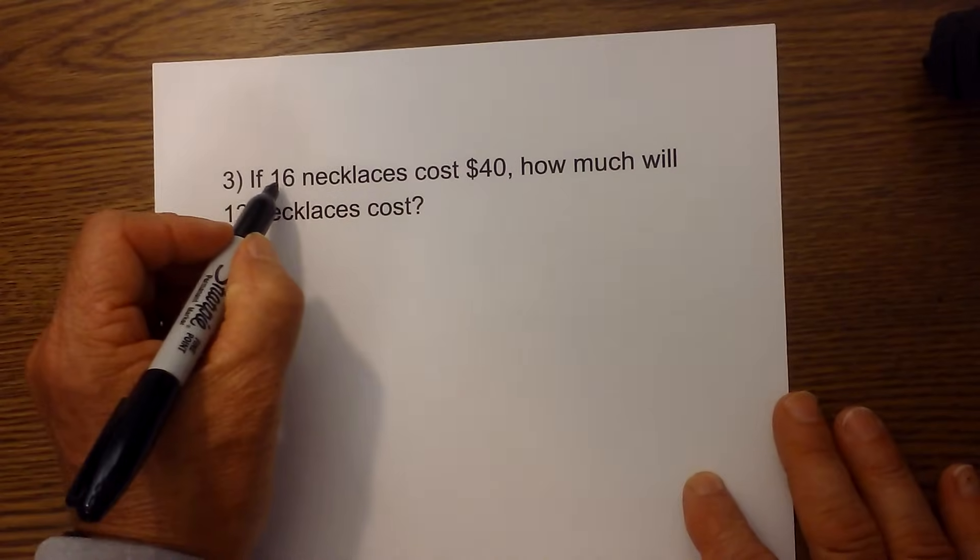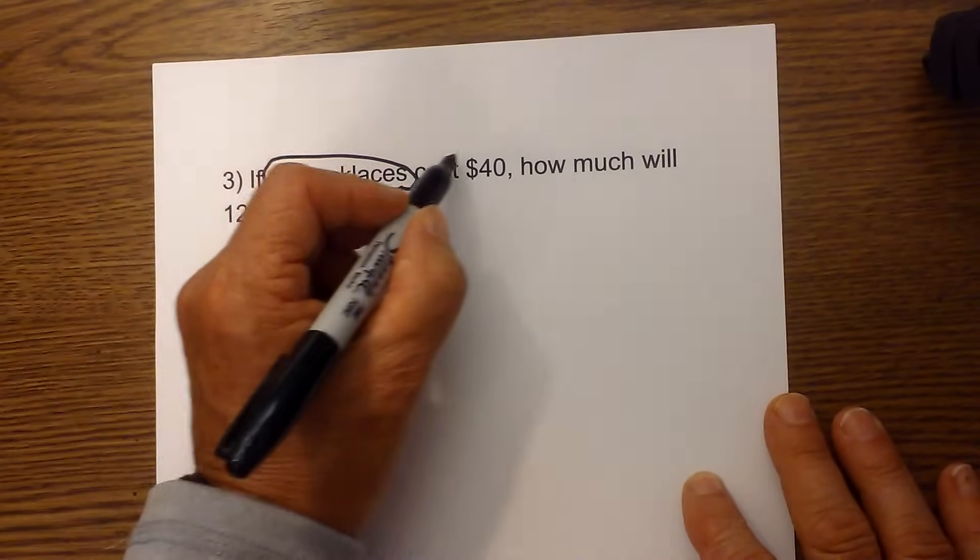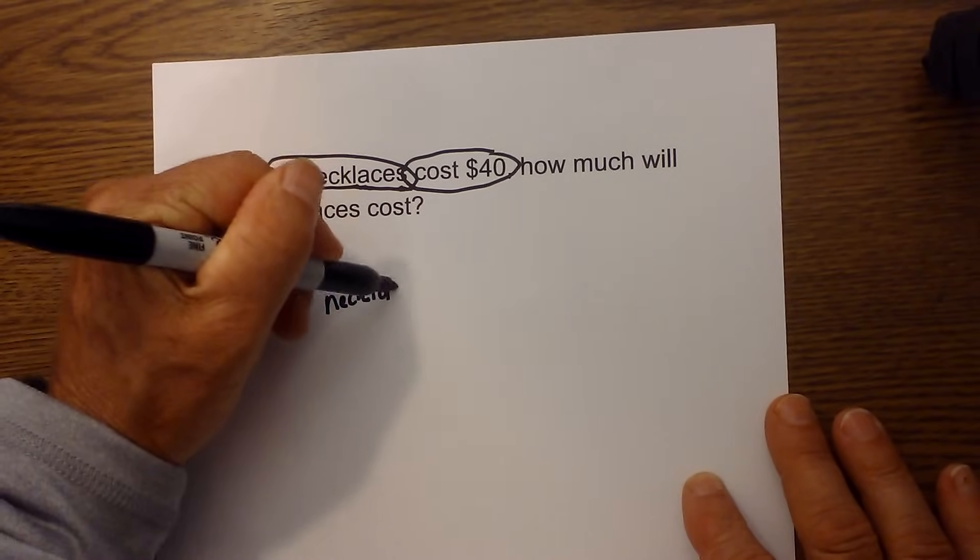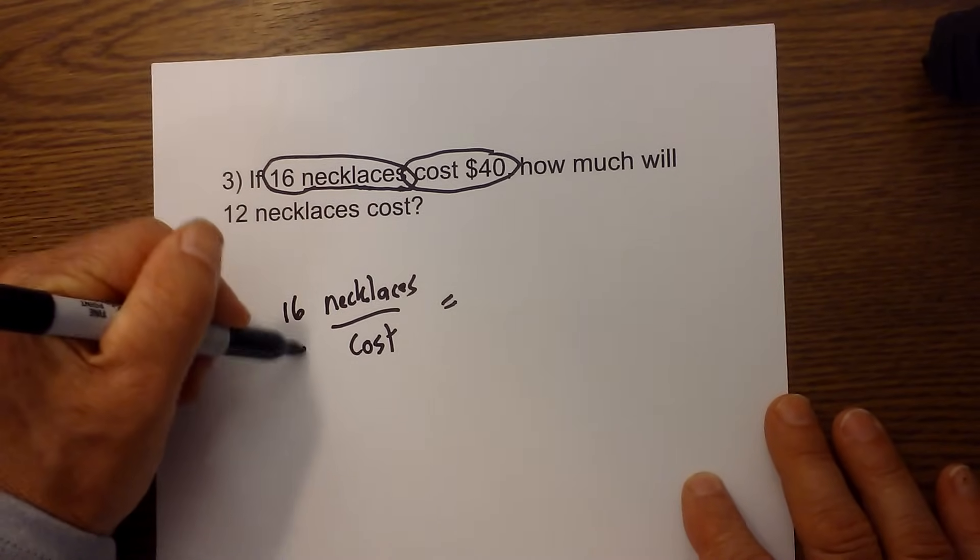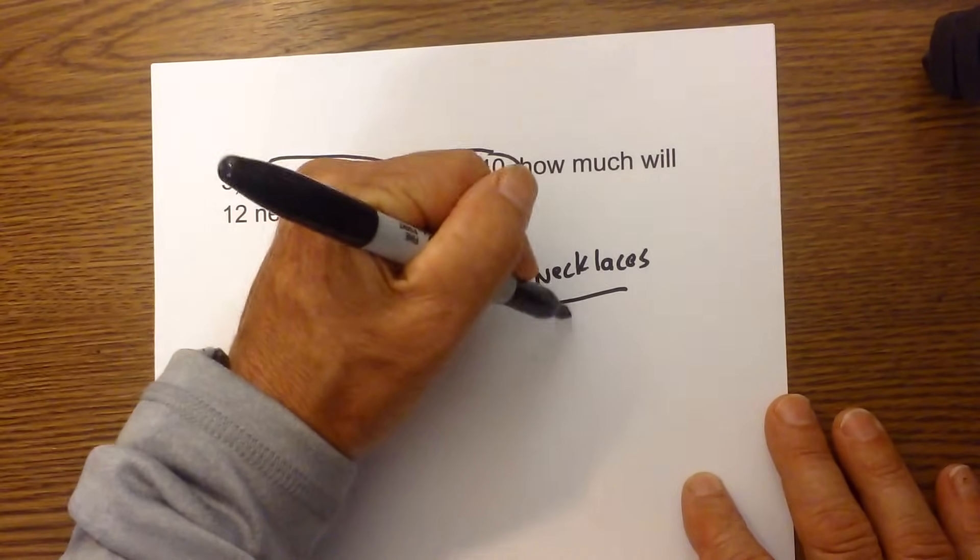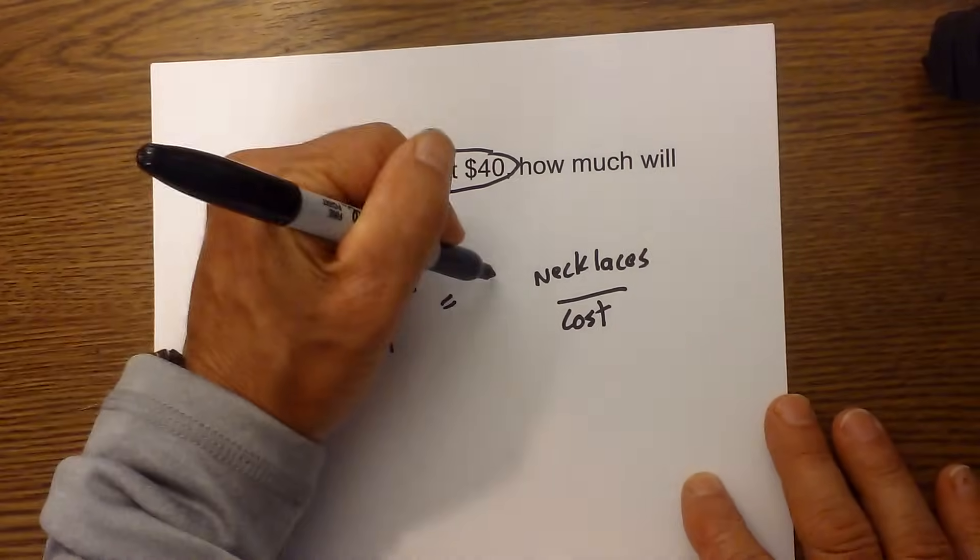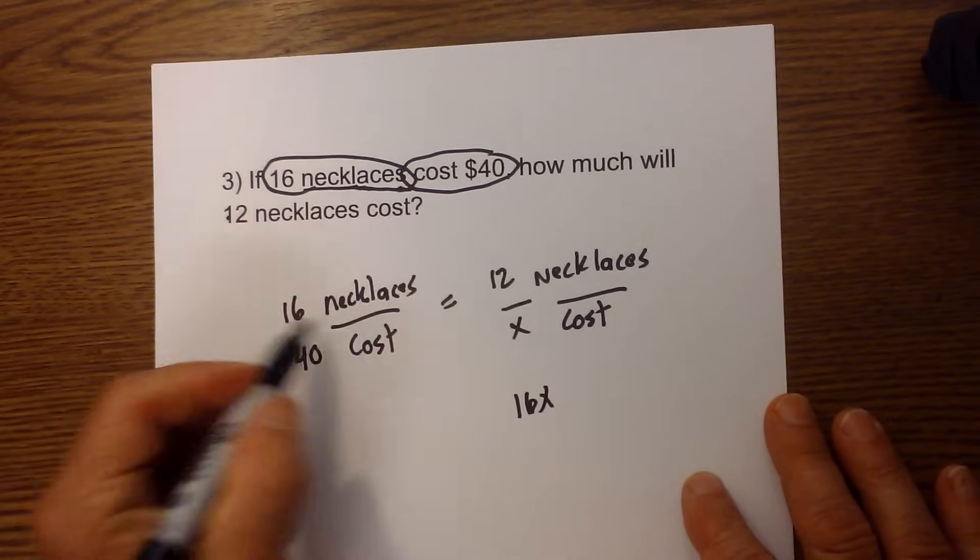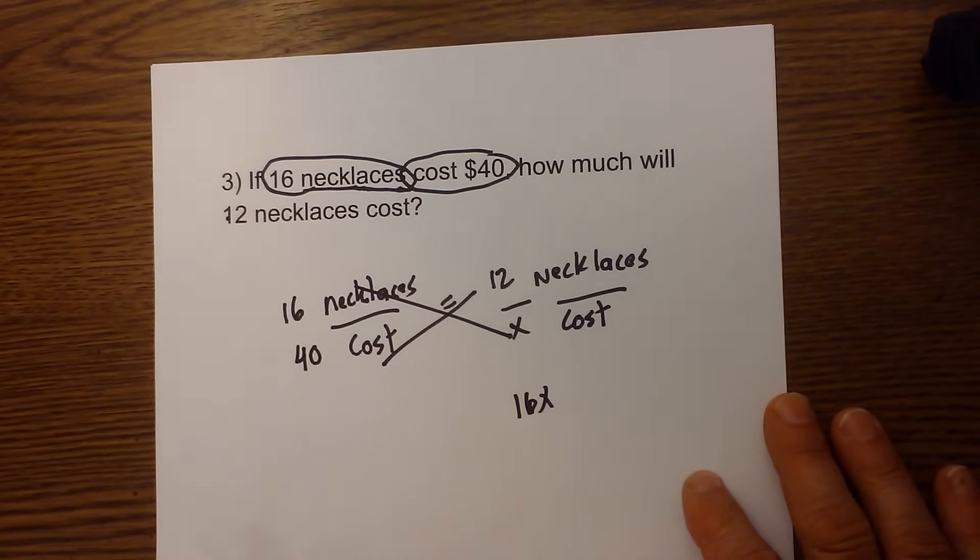16 necklaces and cost. So I'm going to do necklaces over cost equals—I have 16 necklaces cost 40. I'm going to set up a fraction the same way: necklaces over cost. I'm going to fill in what I have. I have 12 necklaces and I need to know what the cost is.